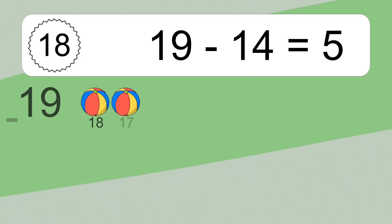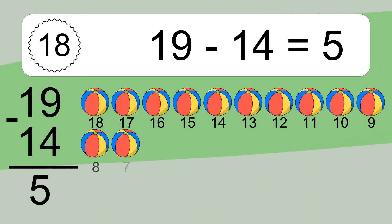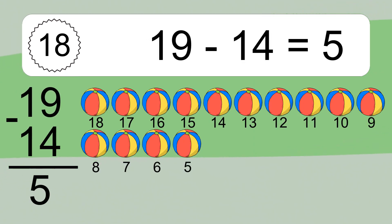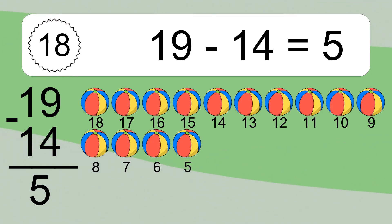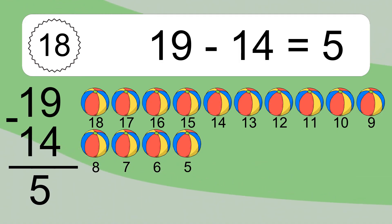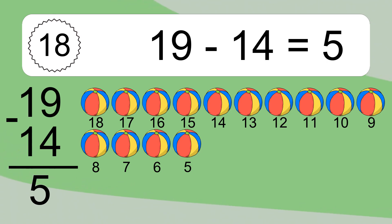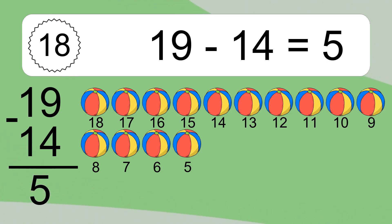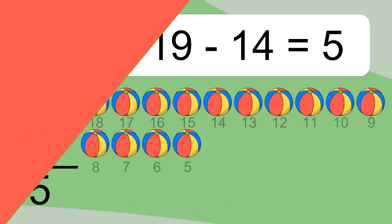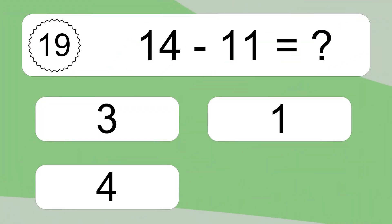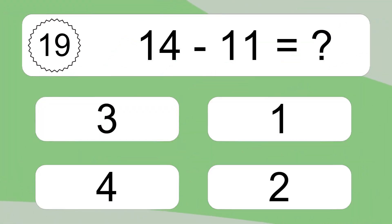19 minus 14 equals 5. Let's count it: 18, 17, 16, 15, 14, 13, 12, 11, 10, 9, 8, 7, 6, 5. 14 minus 11 equals what?